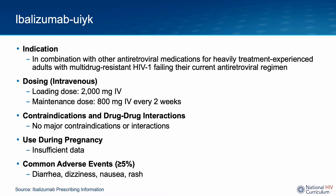First, I'd like to review basic information about ibalizumab. This drug is typically used in combination with other antiretroviral medications for adults with HIV-1 who have extensive antiretroviral treatment experience and multi-class drug resistance. In my experience, its use is rare in clinical practice — it is typically reserved for individuals with significant multi-class resistance and few antiretroviral options. However, in such a scenario, this drug can be quite beneficial. One of the reasons it is used rarely is the required route of administration: it is administered intravenously with a loading dose and then every two-week maintenance doses. Subcutaneous and intramuscular formulations are in development, but at this time, administration requires regular intravenous infusions.